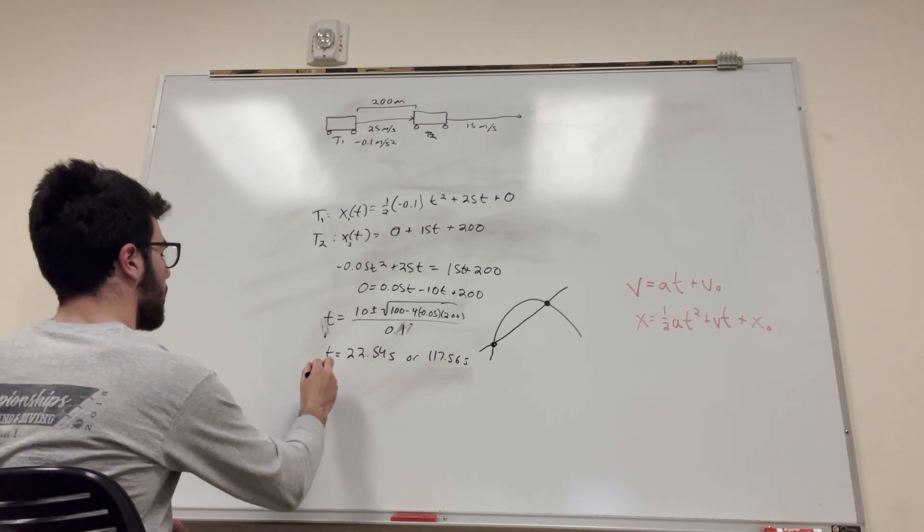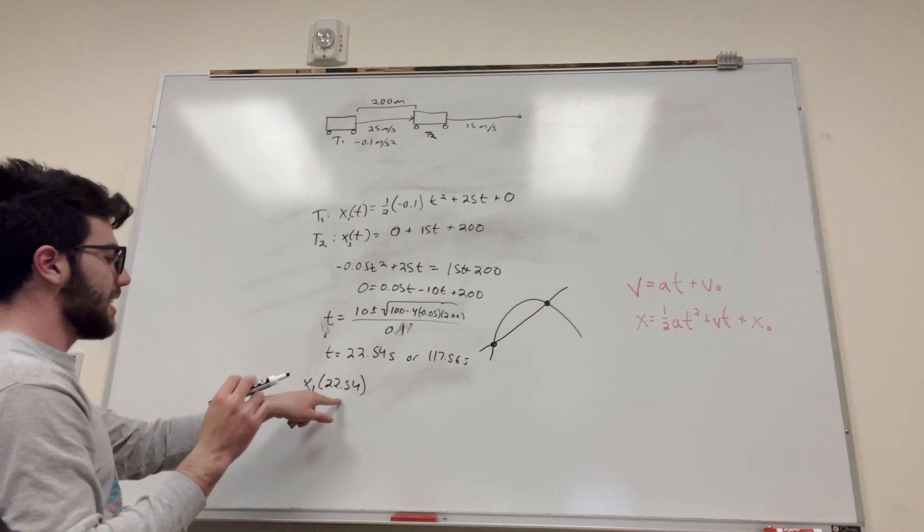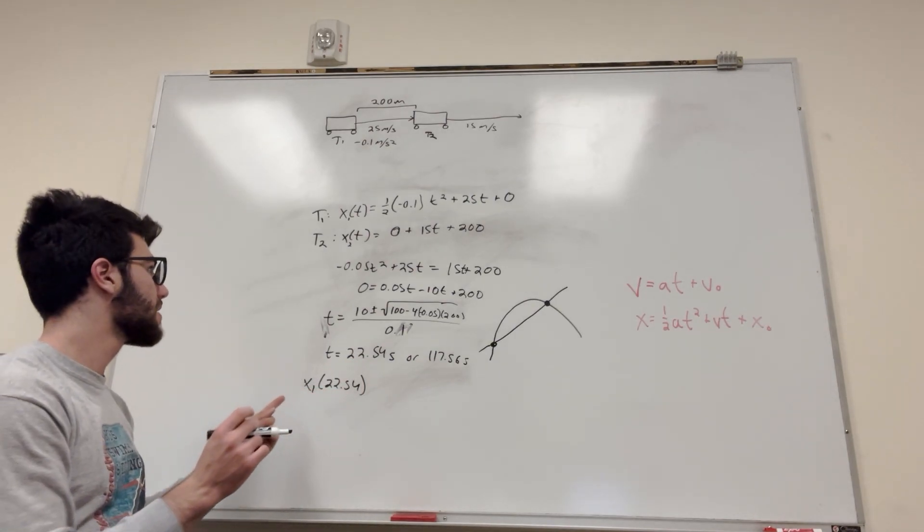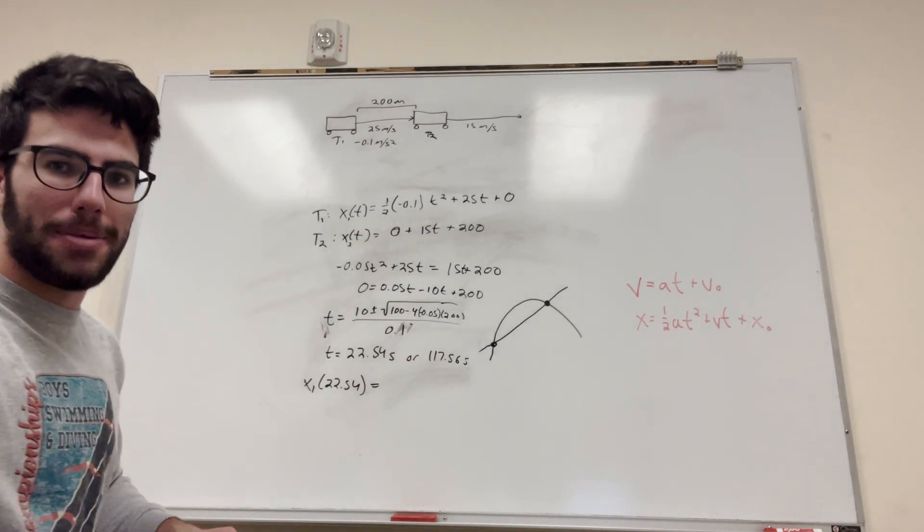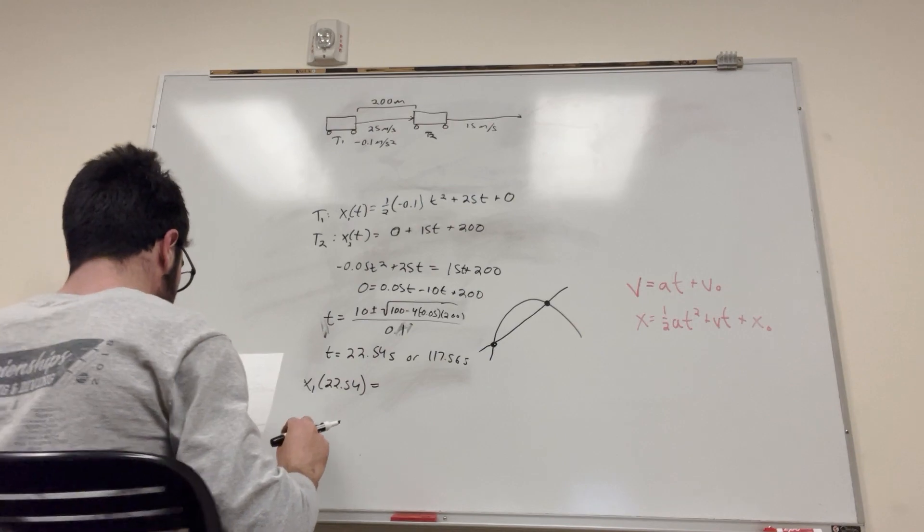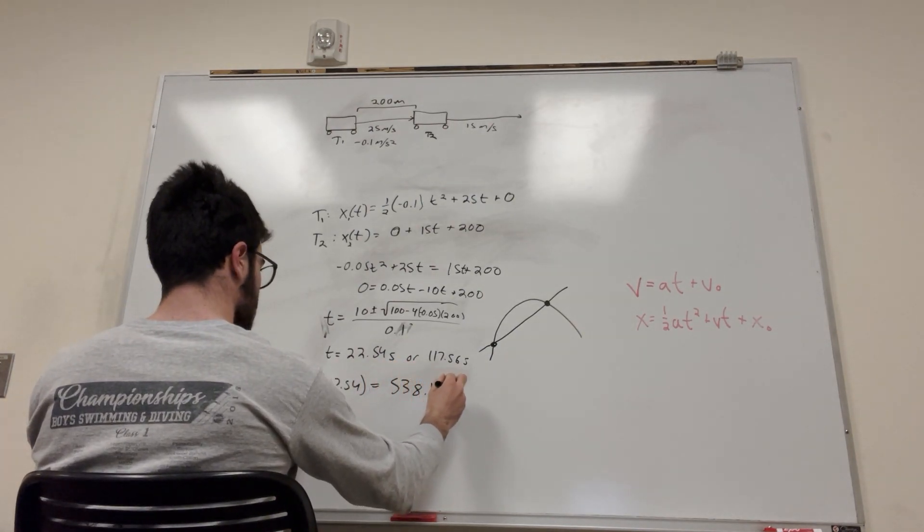So for train one, X1 of 22.54, this is saying that at T is equal to 22.54, what is our X value? So basically, just plug in T for all of that. I need my paper back. Okay, what's the number? 538.1 meters.